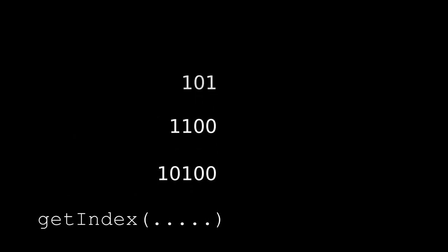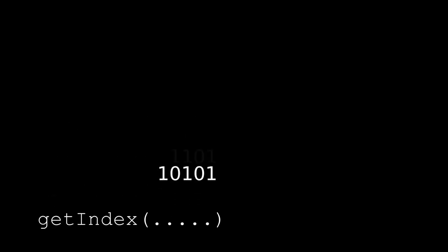Now consider the n choose 2 case. We can partition the full indexing range according to the position of the most significant bit that is set to 1. The sizes of each partition is straightforward to calculate. This also happens to be given by the n choose k combinations formula, where k equals 1. Does this generalize? Here is the n choose 3 case. The partition sizes are given by n choose 2.